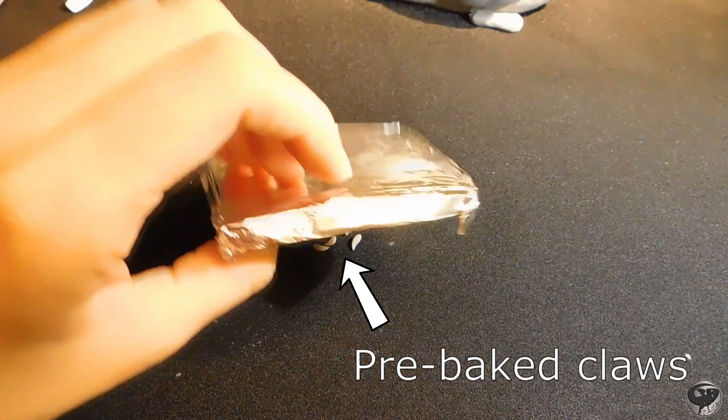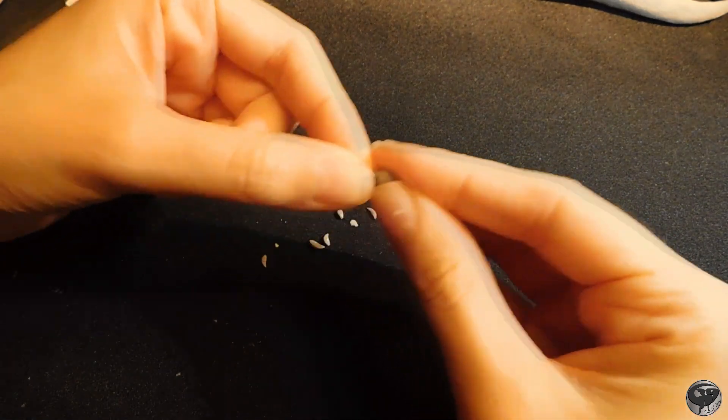I always pre-bake the claws before sculpting the toes. This way, it's easier for me to keep them quite sharp and straight.